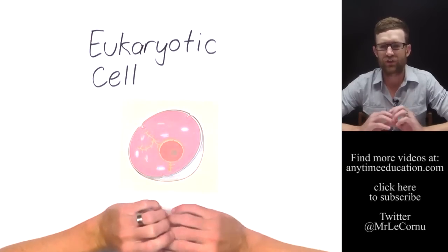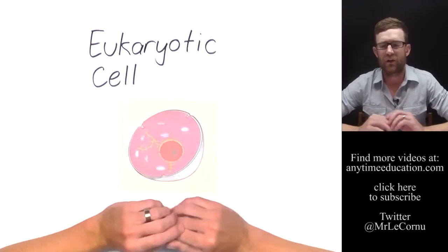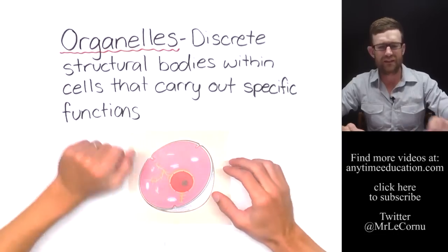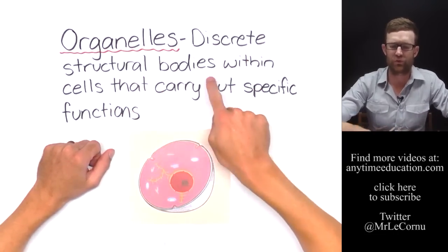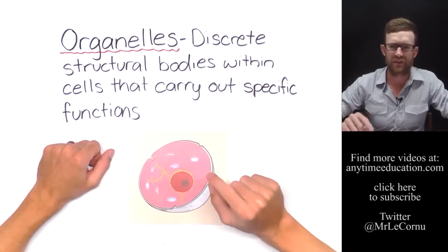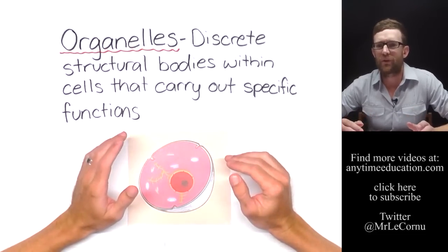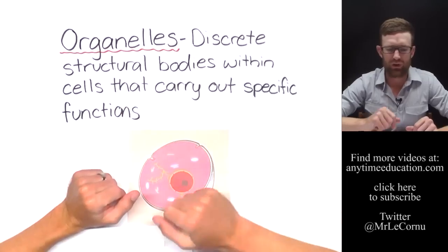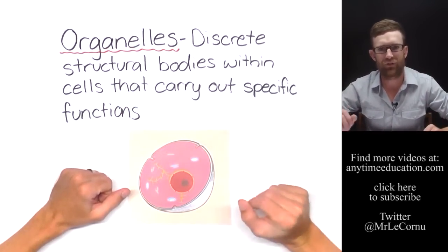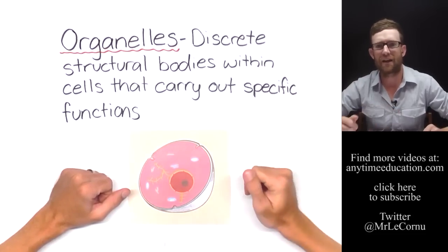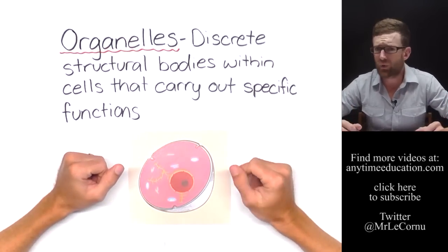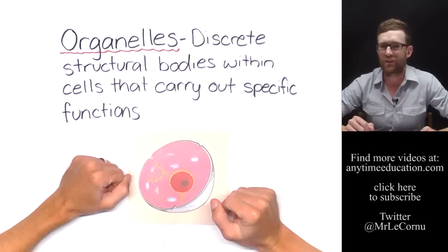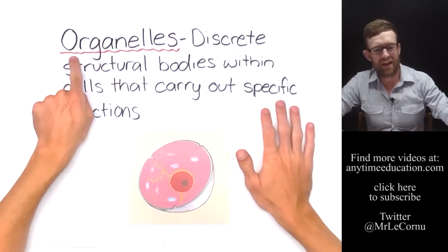If you haven't checked out the eukaryotic and prokaryotic cells video yet, I recommend you go and have a look first. Inside of the cell we have things called organelles. Organelles are discrete structural bodies within cells that carry out specific functions. Think of things like your eyes, your heart, your kidneys — they are discrete structural bodies within your body that carry out specific functions. Within the cell there are specific structures with specific functions, just like the organs in your body — that's how they get the name organelles.